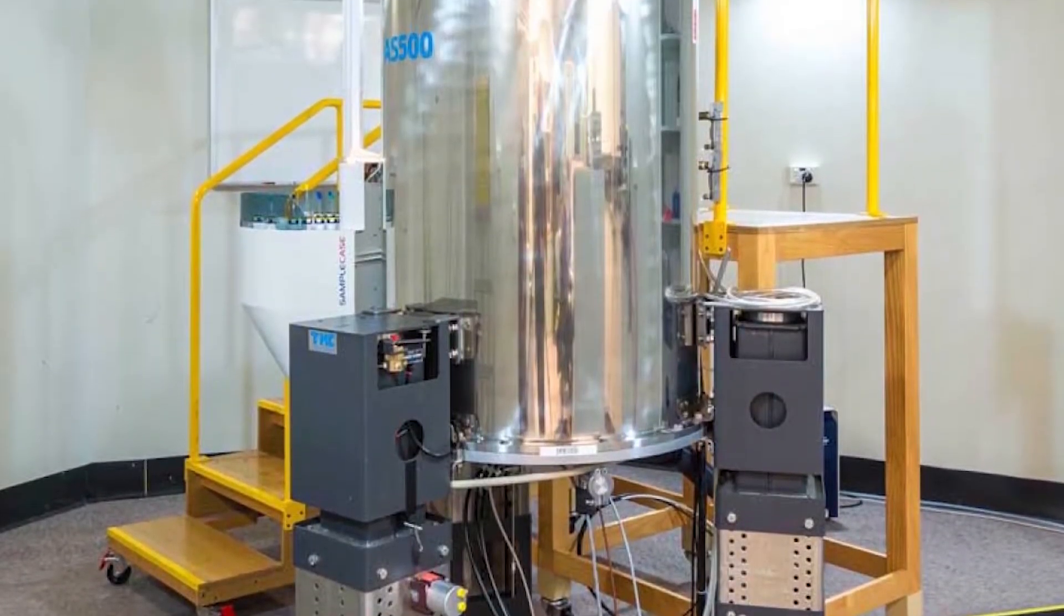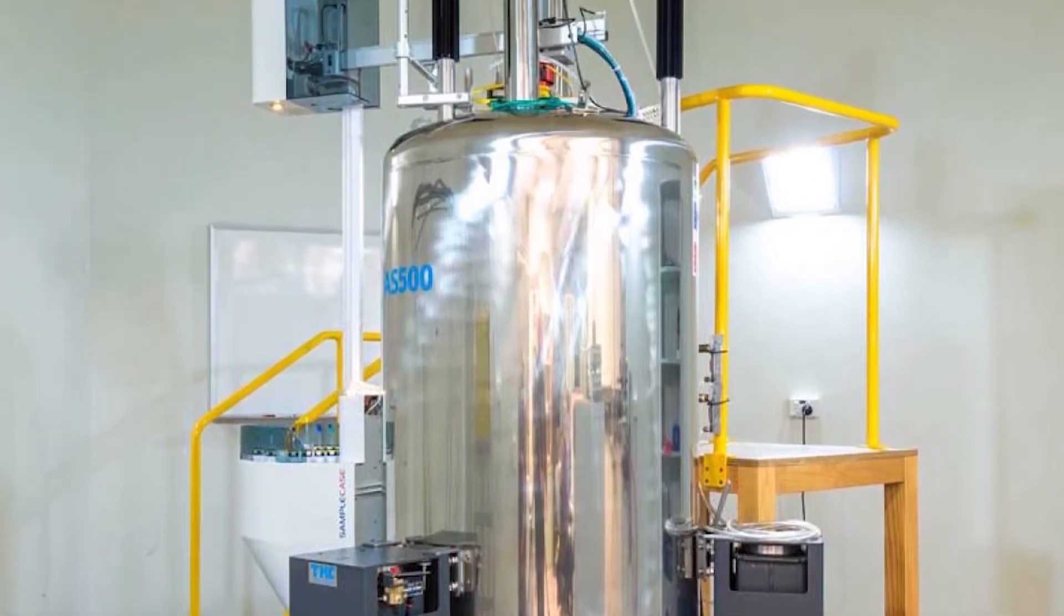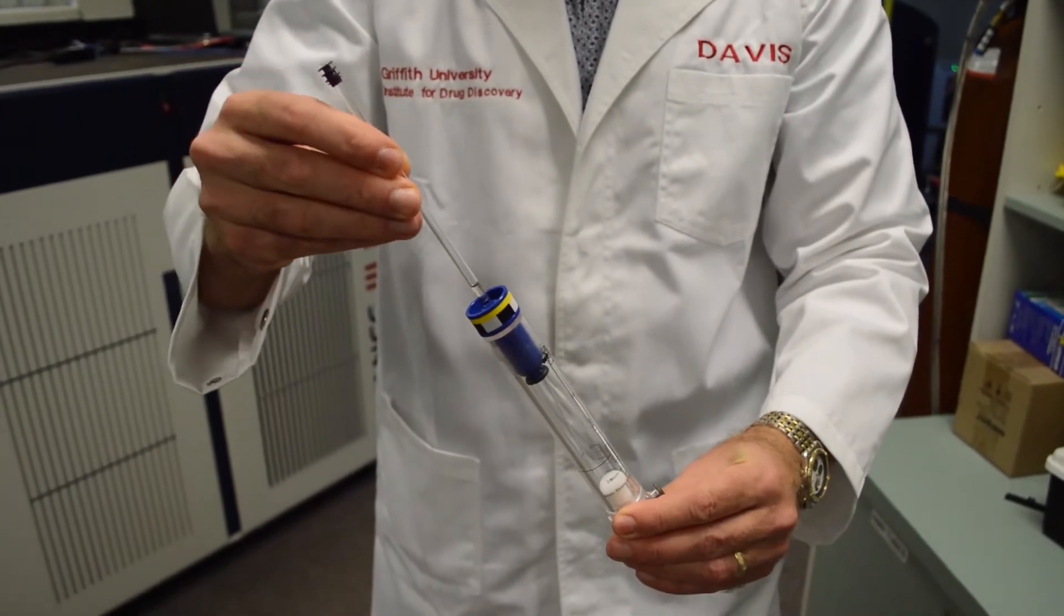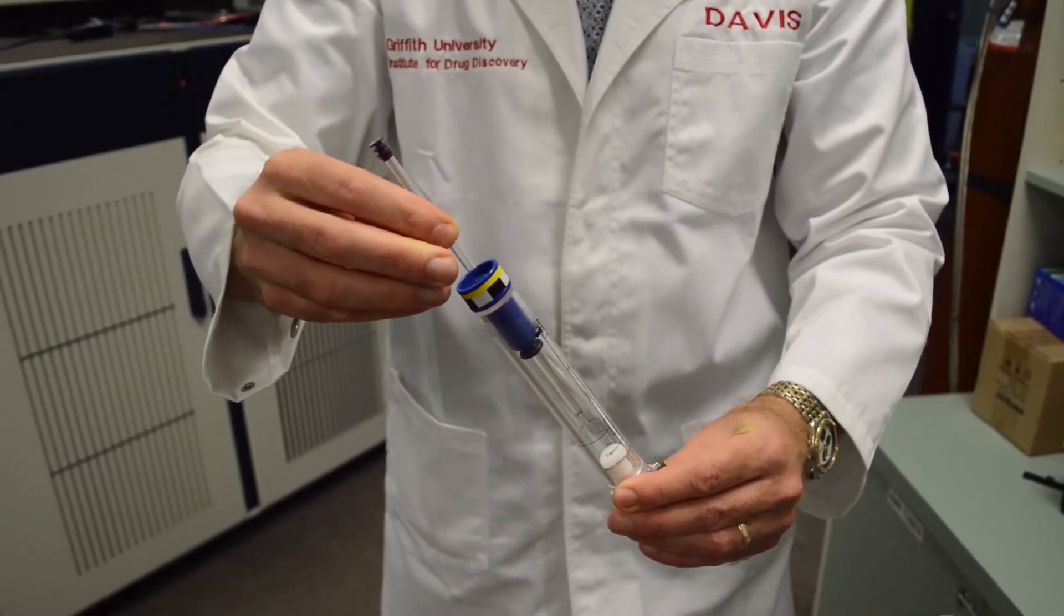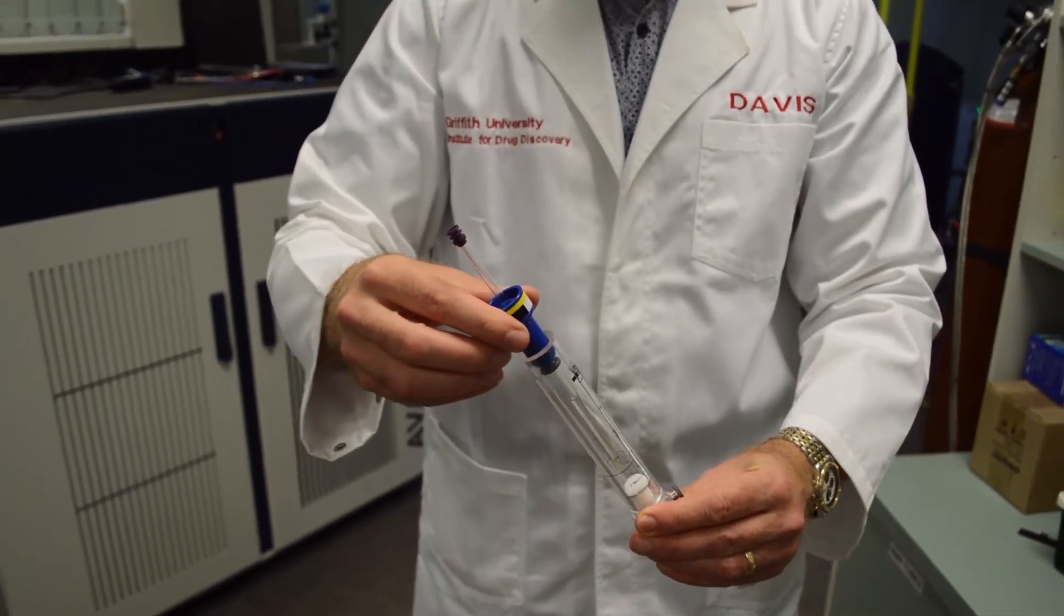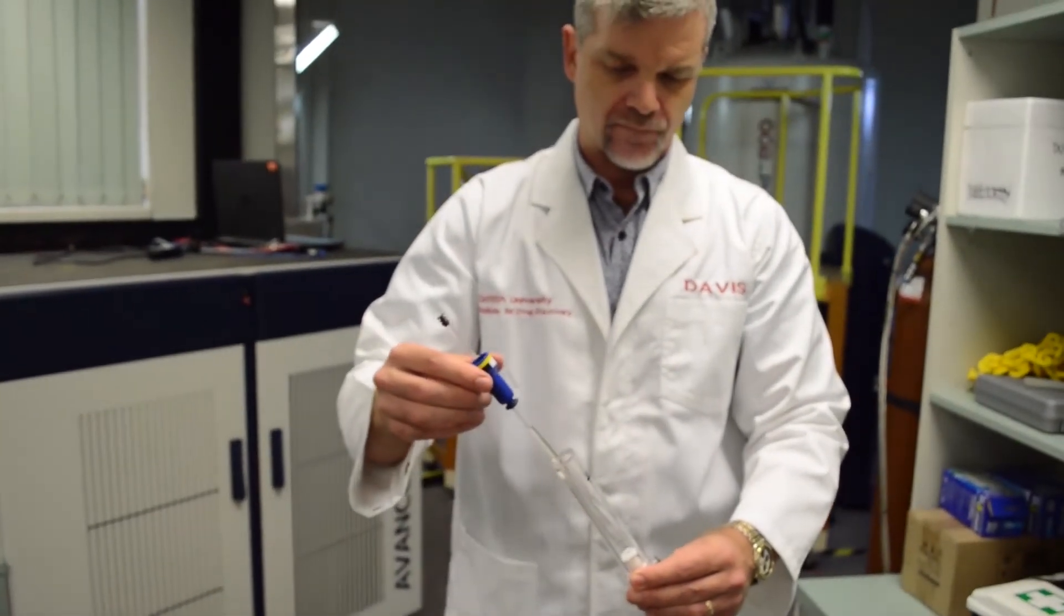This is an NMR machine. It consists of large superconducting magnets, robotics and an energy source. The NMR is filled with liquid nitrogen and helium to keep the magnets cold. We drop the sample of our natural product right into the centre of the magnets in order to analyse it.